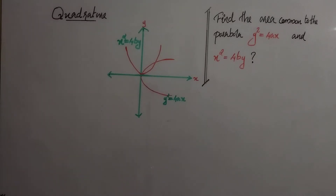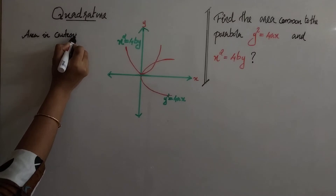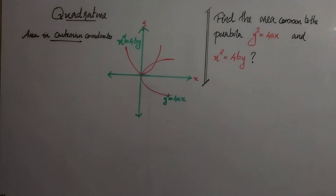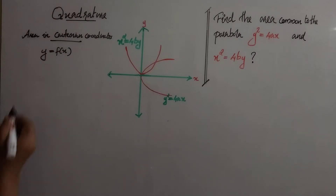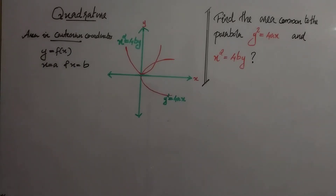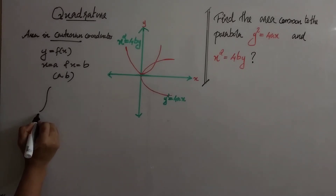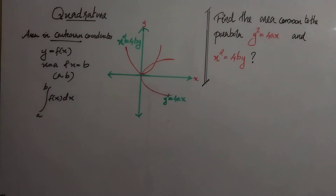Quadrature is the process of determining the area of a plane region. To find the area in Cartesian coordinates, we have one formula: the area bounded by the curve y = f(x), the x-axis, and the ordinates at x = a and x = b, where f(x) is a single-valued, finite, continuous function of x in the range [a, b], is given by the integral from a to b of f(x) dx.